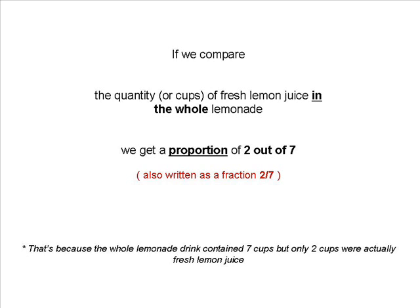If we compare the quantity or number of cups of lemon juice in the whole lemonade drink, we get a proportion of two out of seven. That's because the whole lemonade drink contains seven cups, but only two of those cups were actually fresh lemon juice.